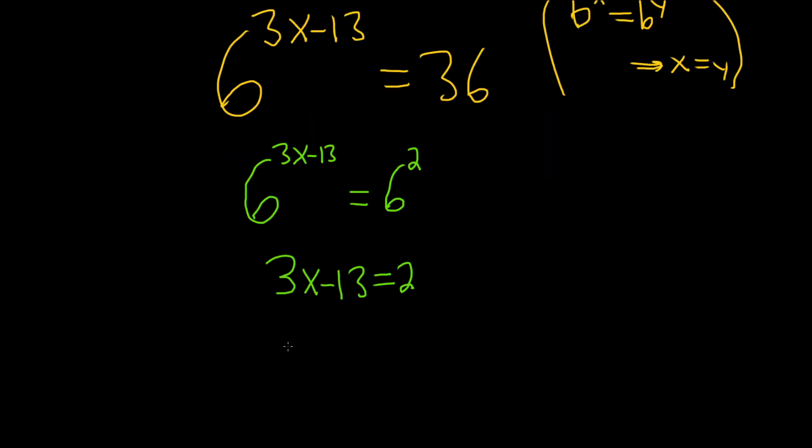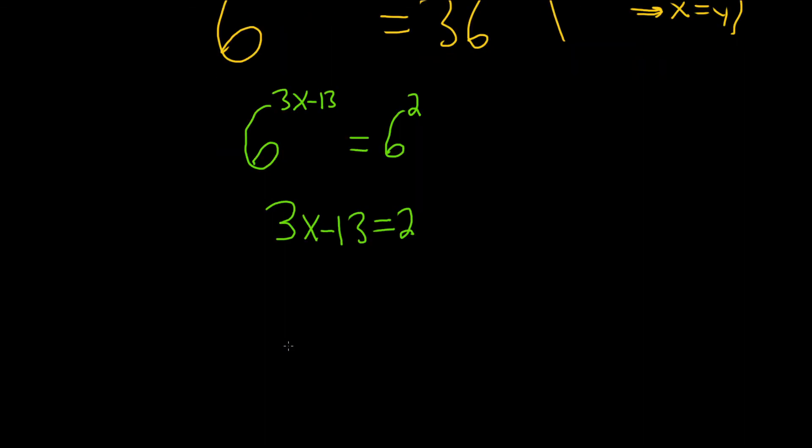Good stuff. So now all we have to do is solve for x. We're subtracting 13, so we can add 13 to both sides. Plus 13, plus 13. So we have 3x equals 2 plus 13 is 15.